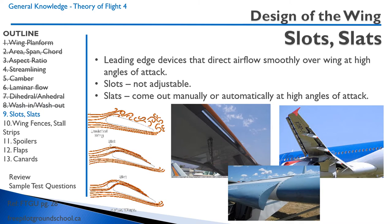Slots and slats are both leading edge devices that redirect airflow smoothly over the wing at high angles of attack. Slots are not adjustable, while slats come out at high angles of attack. At high angles of attack a regular wing produces a lot of turbulence, but a slot or slat redirects the air downward. You can see this on aircraft like the Zenair 701, which has slots or slats, and the 737, which obviously has slats that come in and out together with the flaps for high angles of attack.